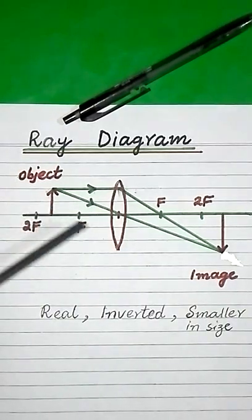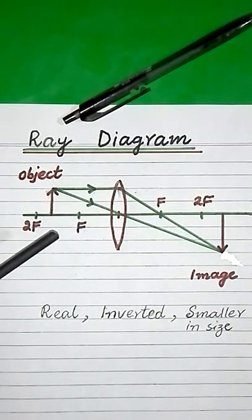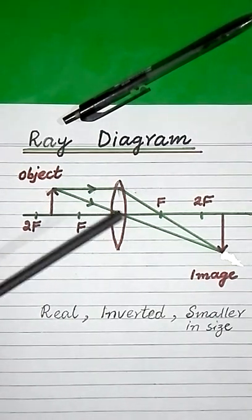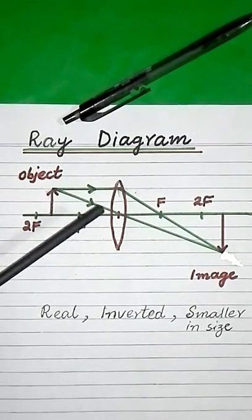So dear students, we place an object in front of a convex lens between 2f and f. Now remember to get the image of an object we need at least two rays moving in different directions.